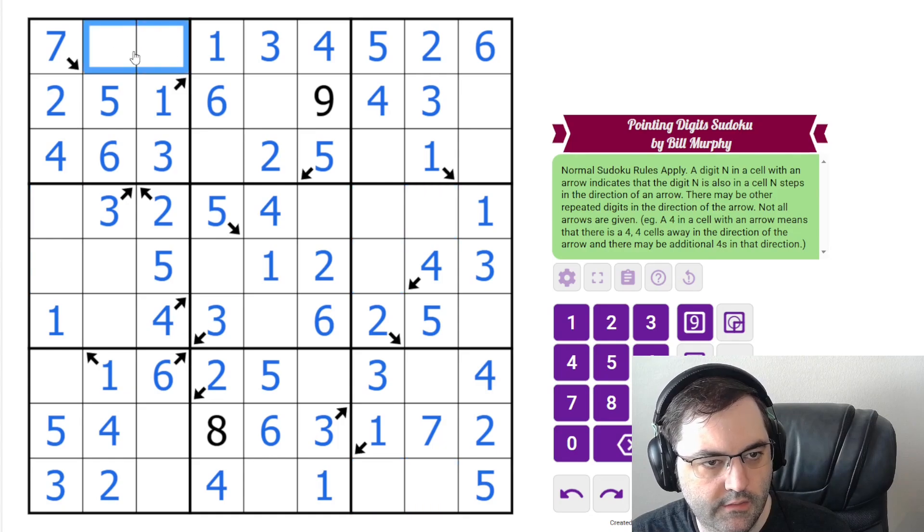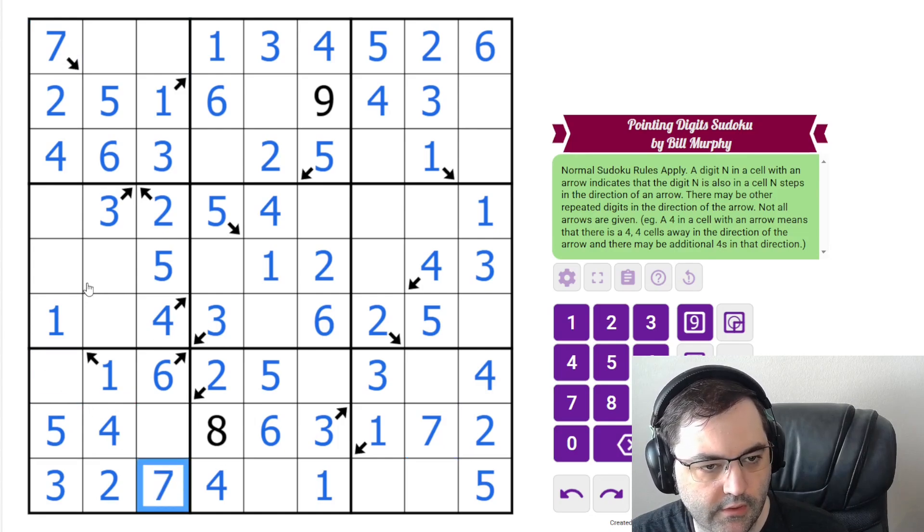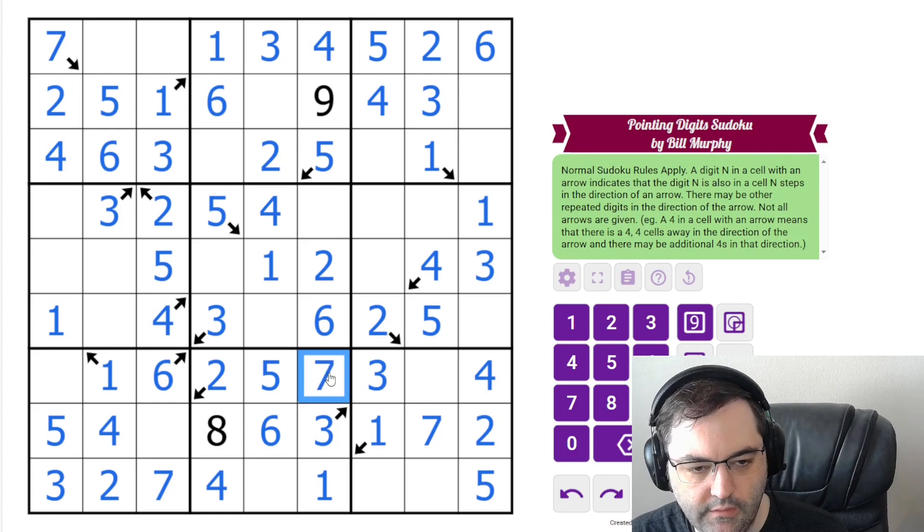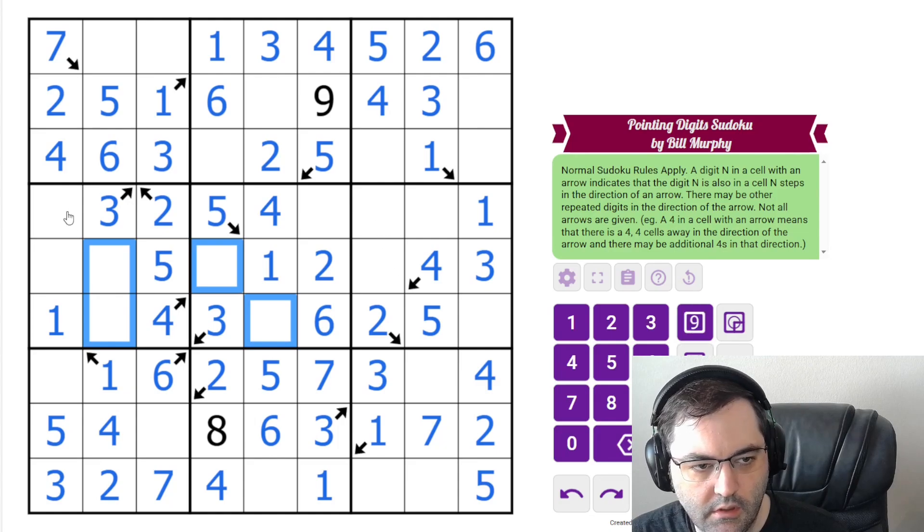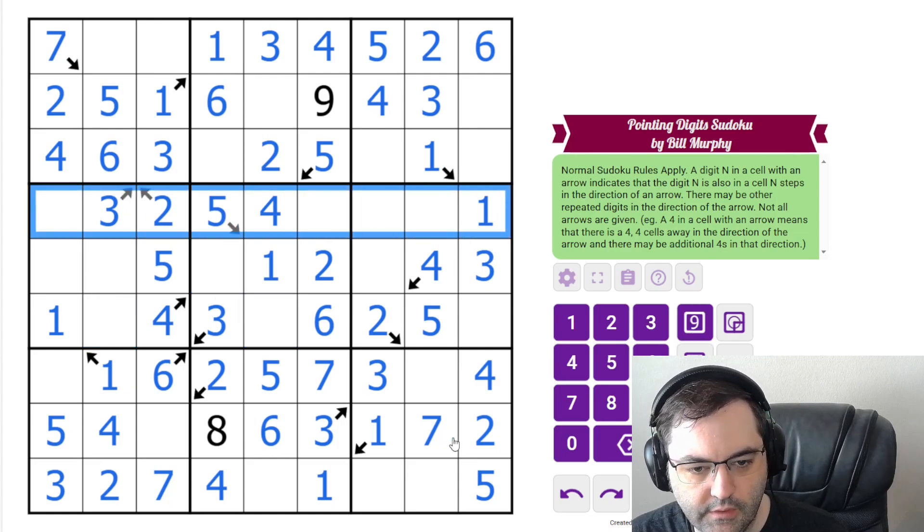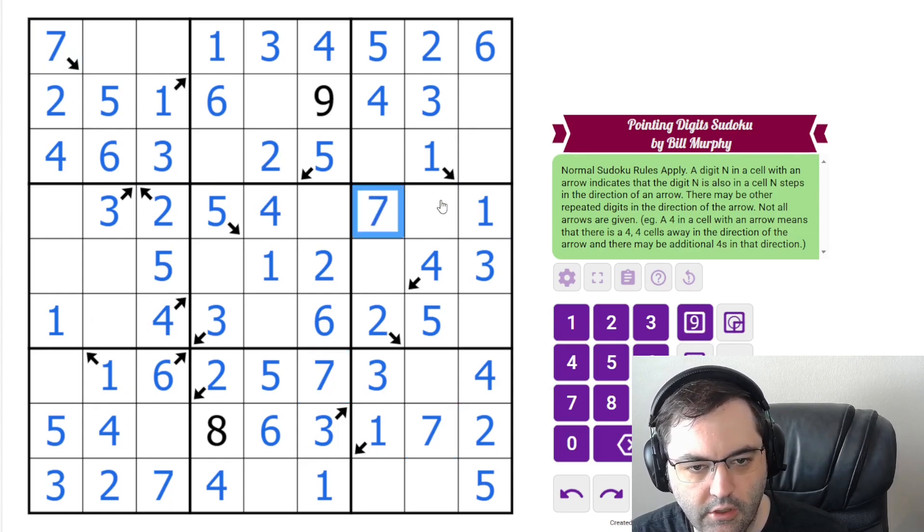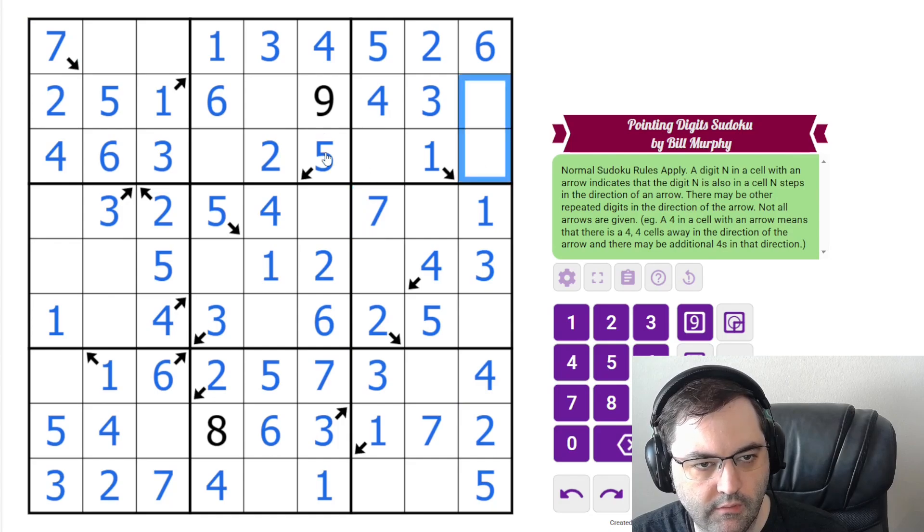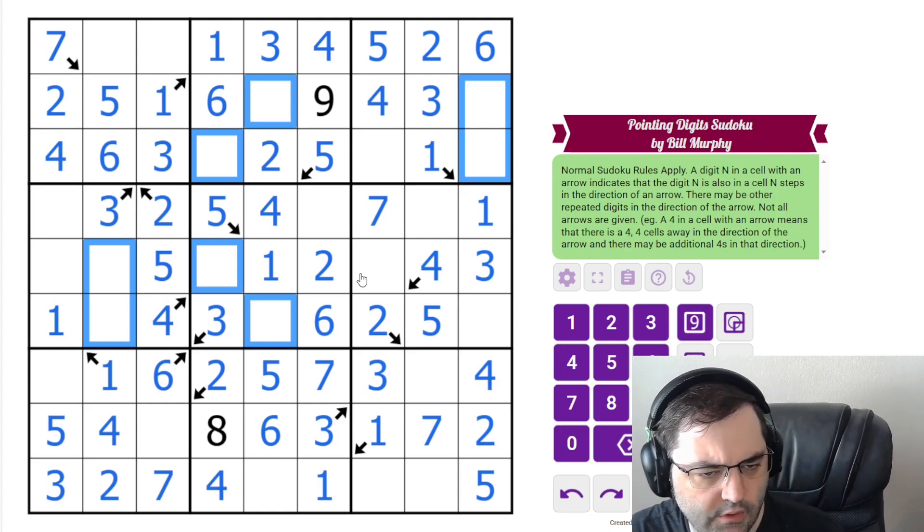Seven. We have two sevens. In this box, it can't go in either of those cells. Seven's in one of these. Seven has to go here in this box. Seven's in these. That means in this row, the only place it can go because of these sevens is here. Seven's in one of these, these, these, these. Fun little pattern that we can't resolve yet.